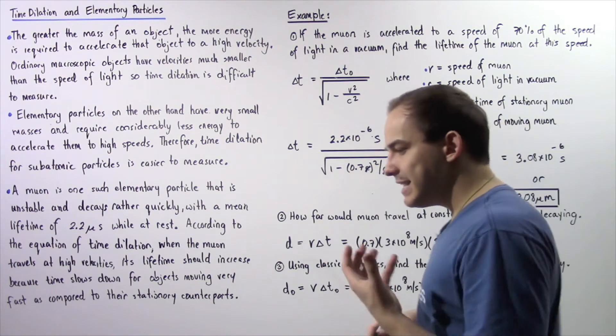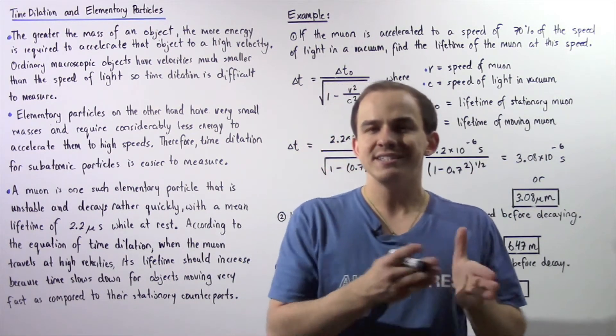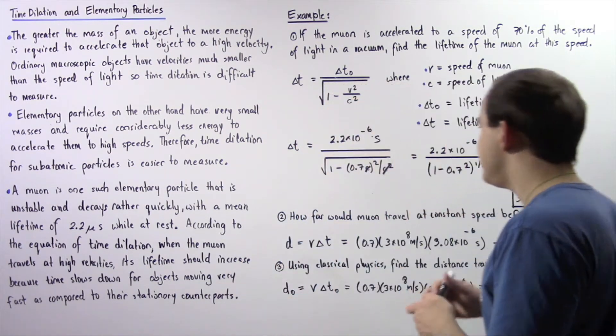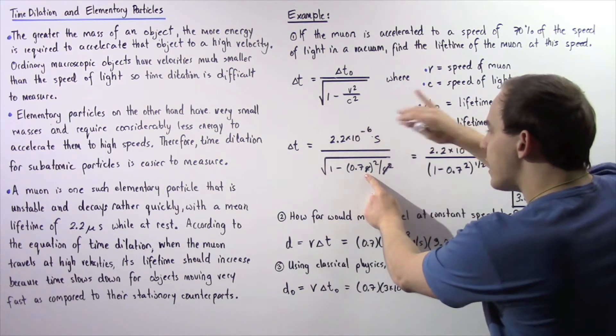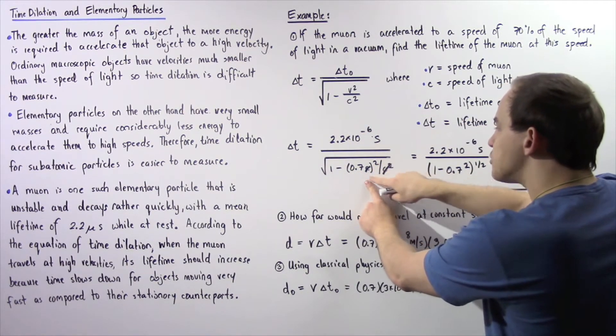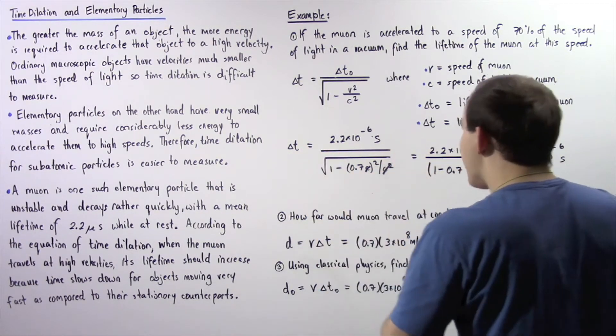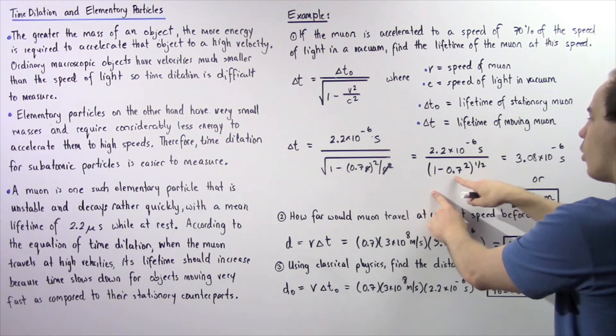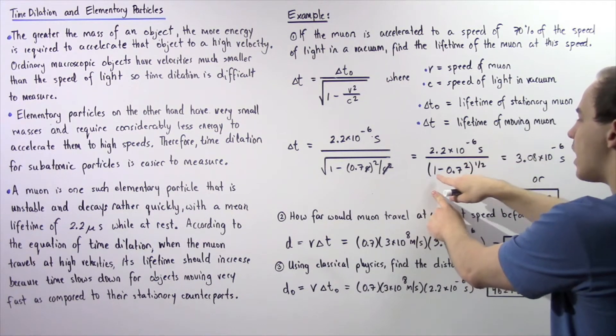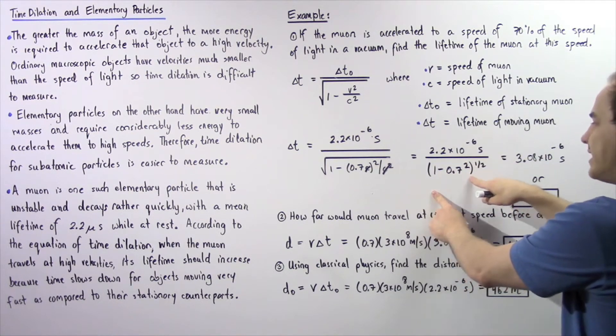So we know that velocity is equal to 0.7 multiplied by c. So 0.7 multiplied by c, we square that and the c squares will cancel on top and bottom. So the bottom becomes the square root of 1 minus 0.7 squared. Now 1 minus 0.49 gives us 0.51.